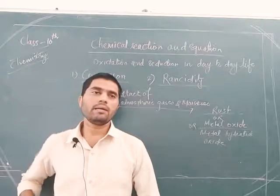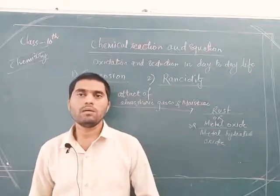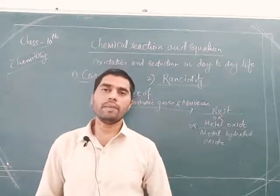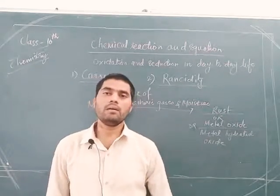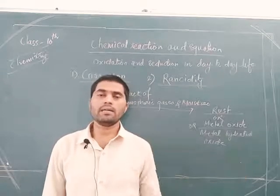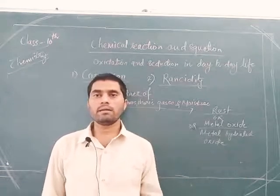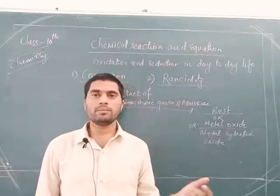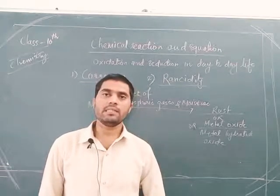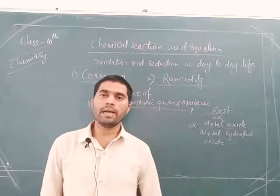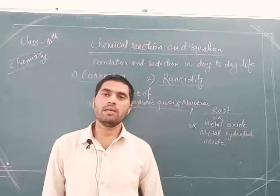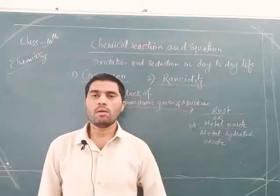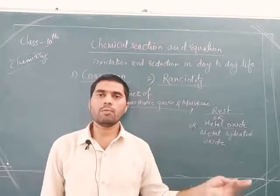That red color surface is a compound of metal which is an oxide — an oxide of metal. For example, if the metal piece is iron, the red color rust or red color layer present on the metal surface is iron oxide. If there is copper, copper forms copper hydroxide and copper carbonate.